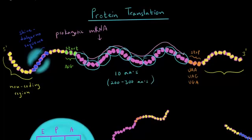At some point the ribosome will hit the stop codon, shown here in orange. The stop codon can be one of three codons: UAA, UAG, or UGA. The stop codon basically tells the ribosome to stop translating. And then we have another non-coding region (NCR) at the end.